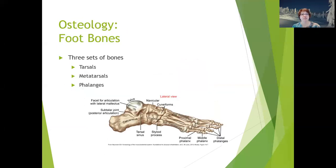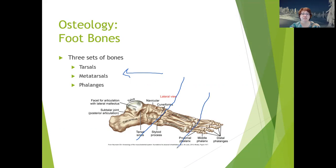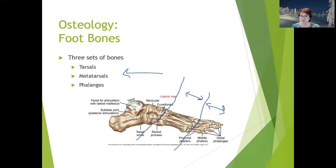Once we get down to the foot, there are three sets of bones that correspond to the rearfoot, midfoot, and forefoot. The tarsals form the rearfoot and midfoot, the metatarsals form the next section, and the phalanges are the toes. The metatarsophalangeal joints can be thought of as the ball of the foot on the plantar aspect, or like toe knuckles on the dorsal aspect.